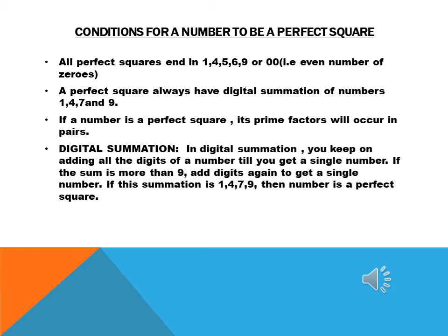If we do digital summation of a number and we get 1, 4, 7, or 9, we say that it is a perfect square. In digital summation, you keep on adding all the digits of a number until you get a single digit. If the sum is more than 9, we add the digits again to get a single number. If this summation is 1, 4, 7, or 9, then it is a perfect square.